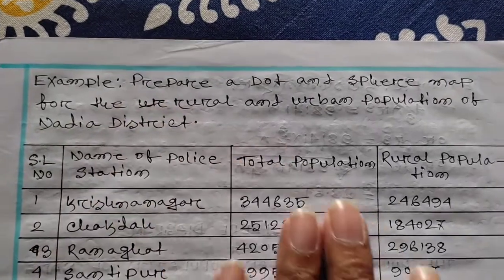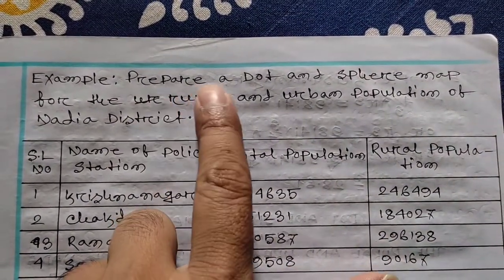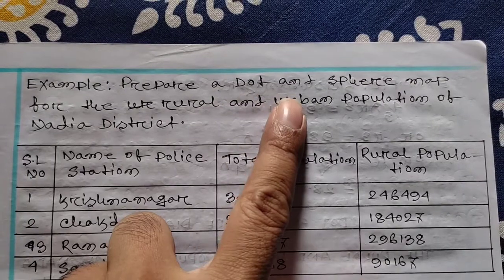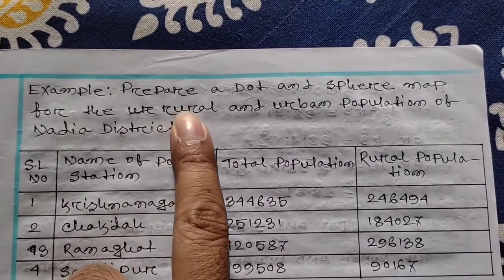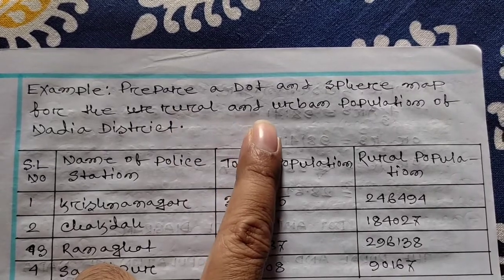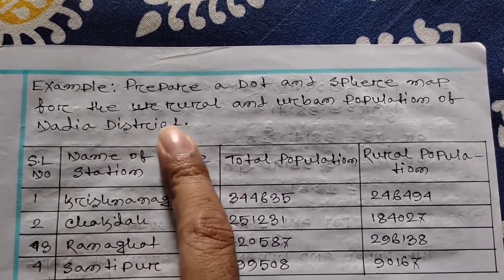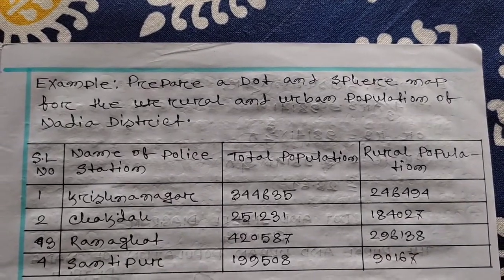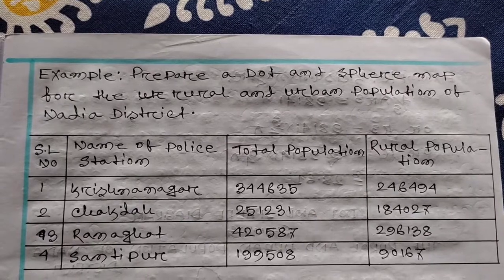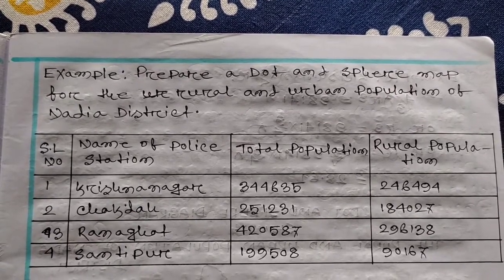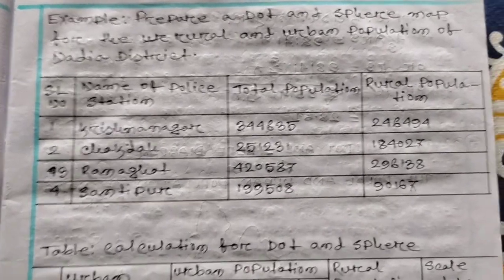What you have to do is prepare a dot and sphere map for the rural and urban population of Nodiyaristic. We will draw a map of Nodiyaristic showing the rural population and urban population.